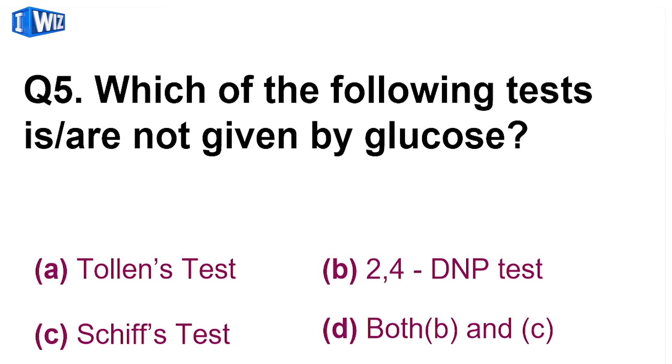Next is, which of the following tests is not given by glucose? Well, glucose mein aldehyde group hota hai, jiski wajah se wo Tollen's test, 2,4-DNP test, Schiff test, yeh sab show kar sakta hai. Lekin glucose ki cyclic form mein change horne ke karen, it is not able to show 2,4-DNP test and Schiff test. So D is the correct answer.